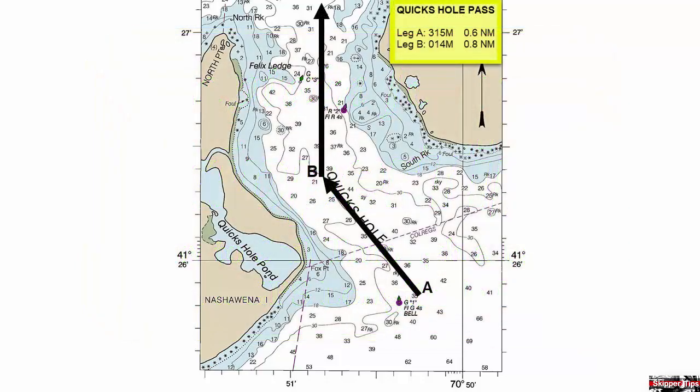Here we want to sail through Quicks Hole in Buzzards Bay, Massachusetts. One of our legs runs due north. We know that longitude runs in a due north-south direction, so we can use this on this leg to make the job easier. Look on your chart and find a longitude line drawn by the cartographer onto the chart.